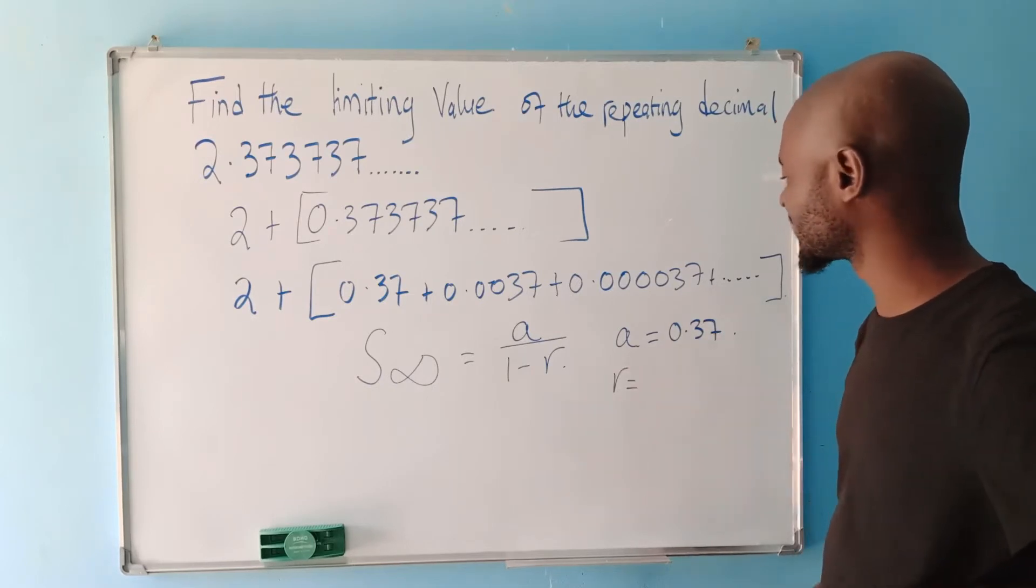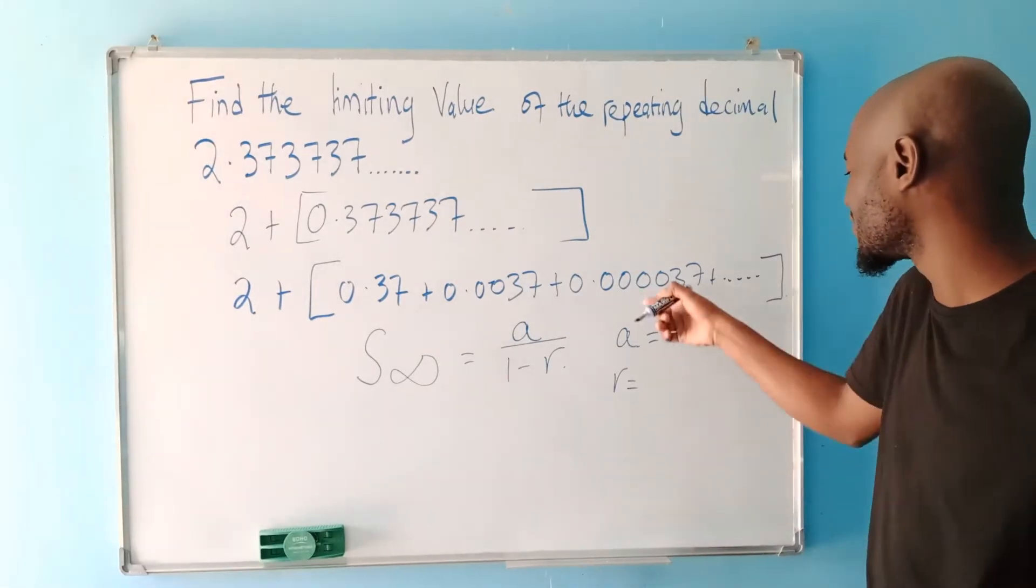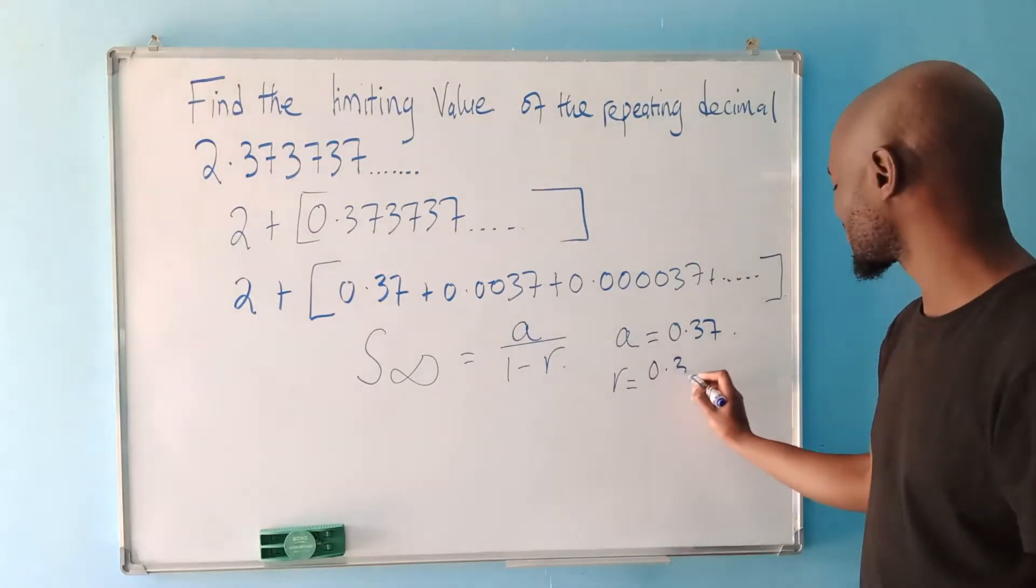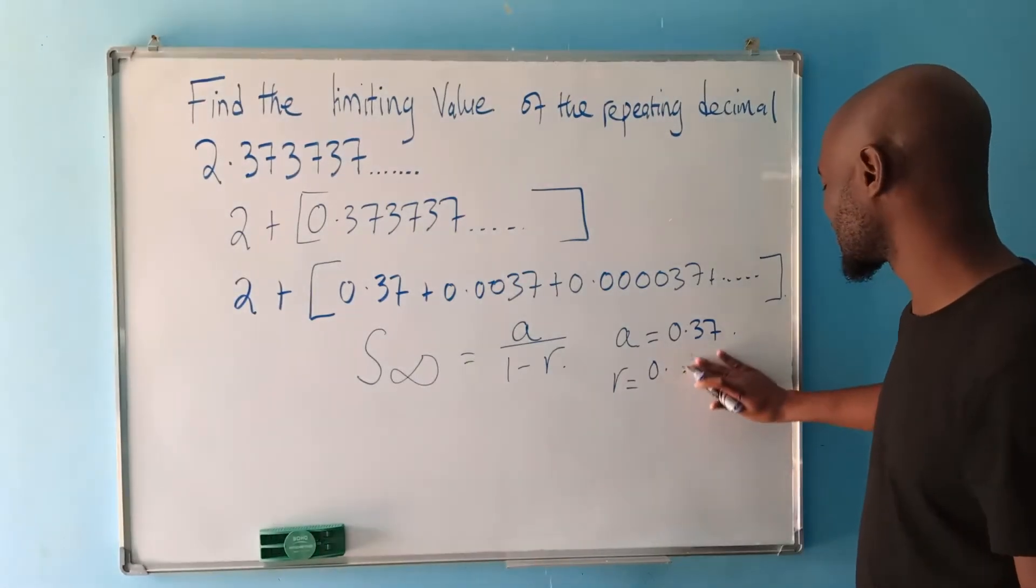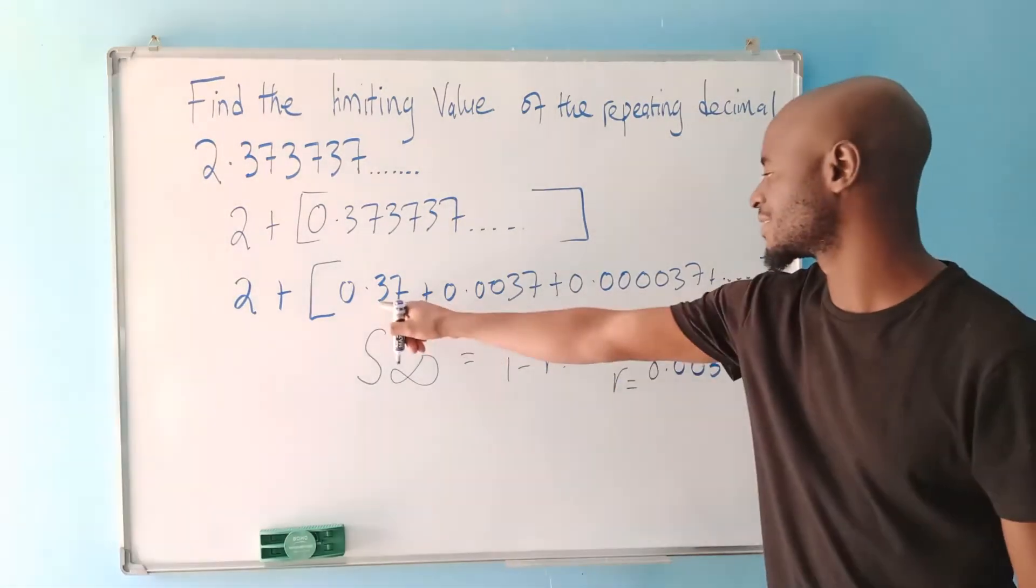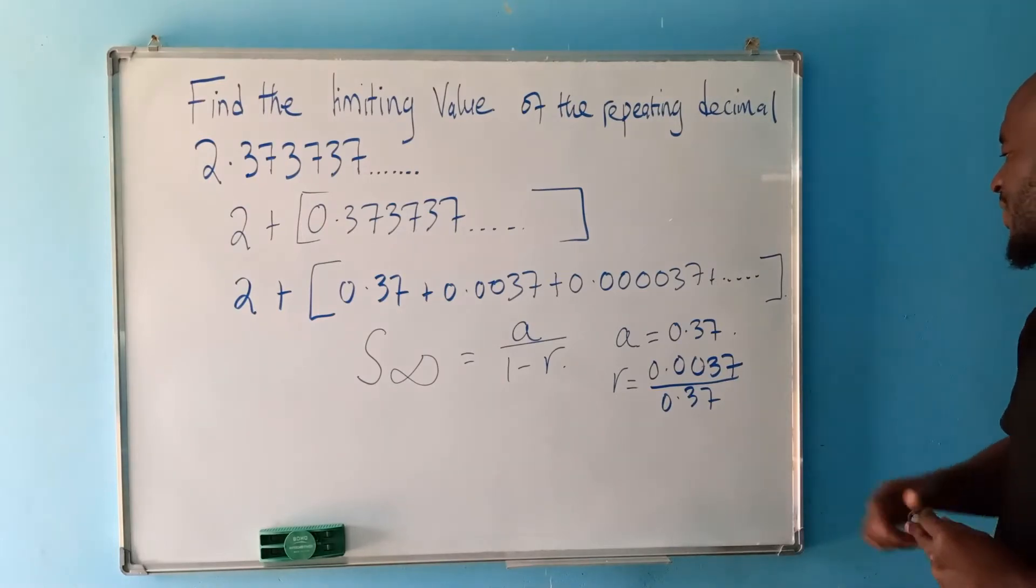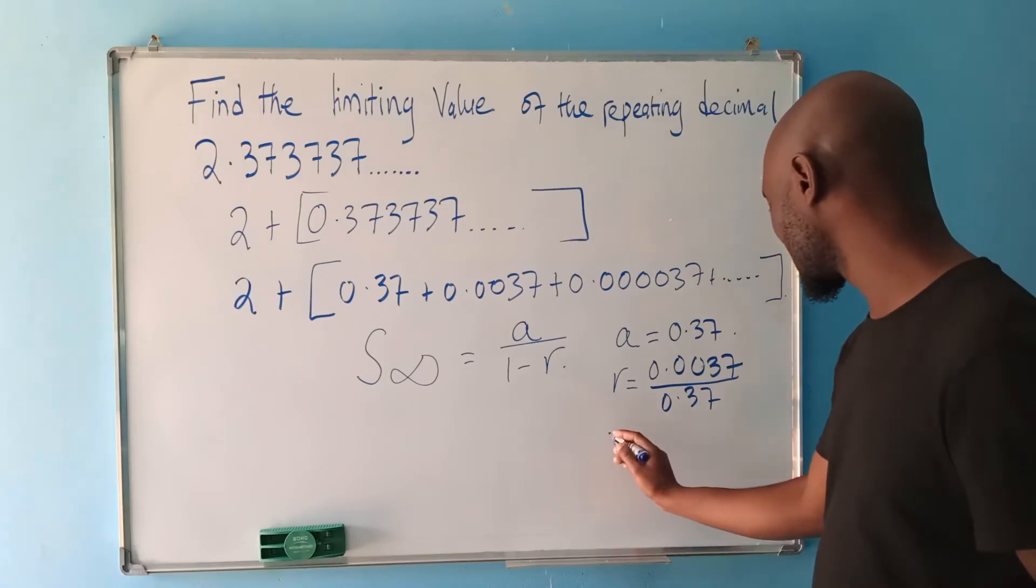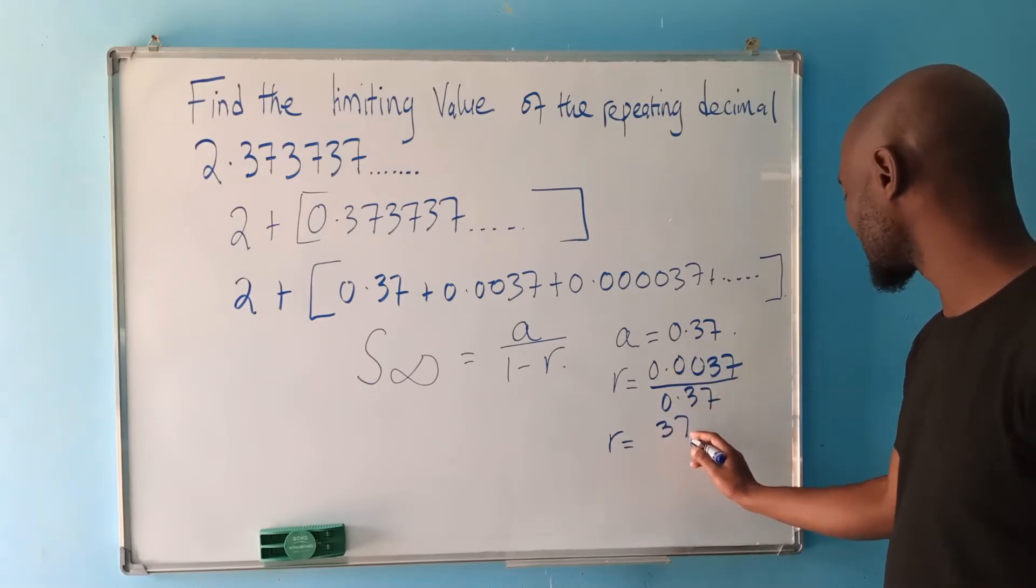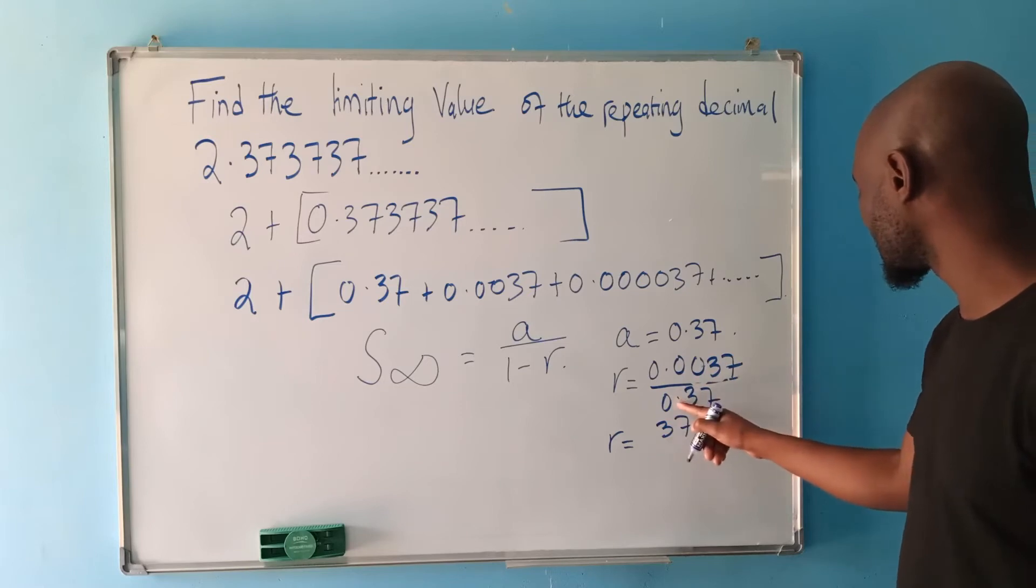And R is the common ratio. So the common ratio, you divide the term in front by the term that is behind there. You can use any two consecutive, any two immediate terms. This is divided by that. The answer will be the same. So we have 0.37. We are dividing the next term, we divide the previous. So we have 0.0037 divided by this one, 0.37. Of course, even this one can be used here. So what we are going to have is R will be equal to...